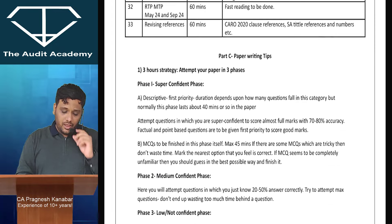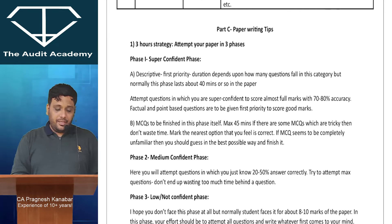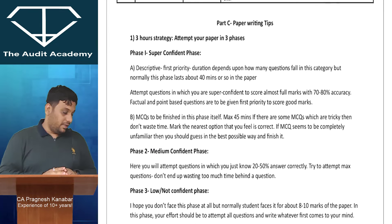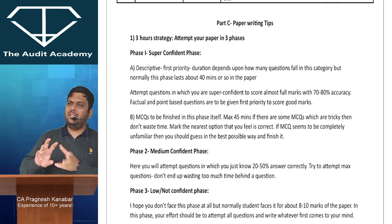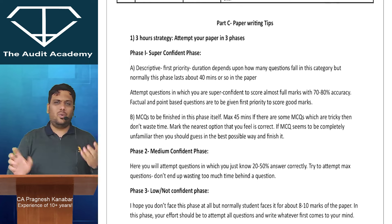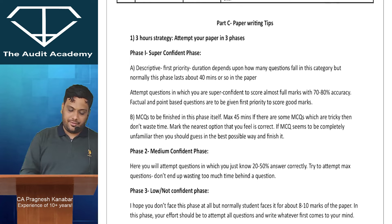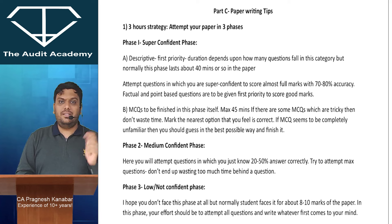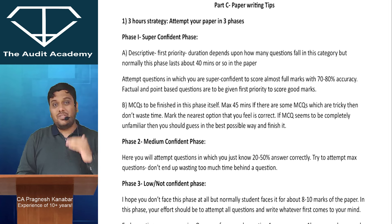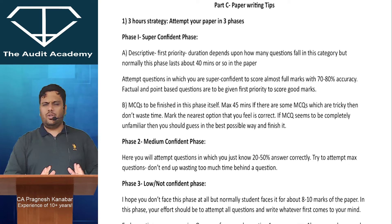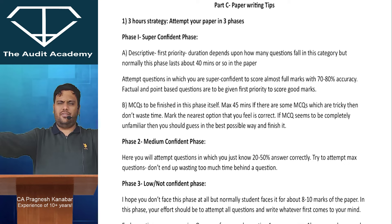Coming to the paper writing tips. You have three hours. Considering six to seven minutes for paper credentials, roll number, and all of that, you have about 173-174 minutes. Phase one should be your super confident phase.